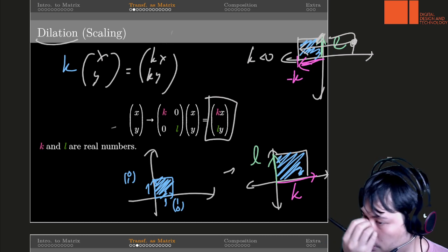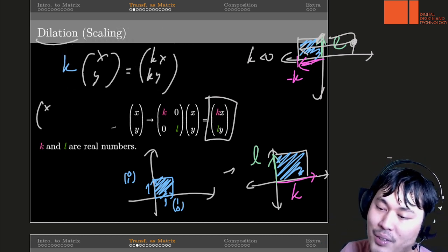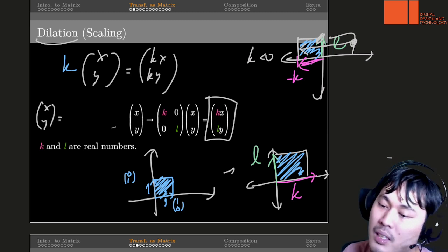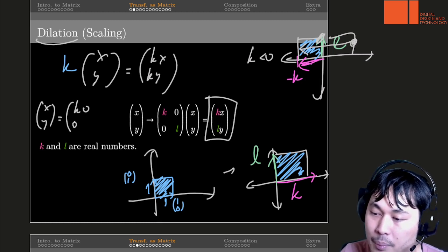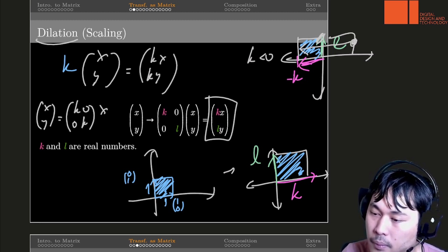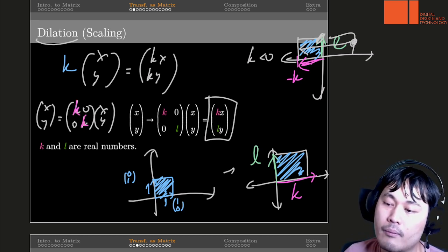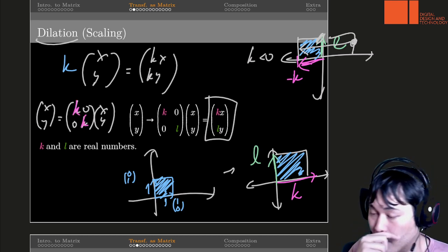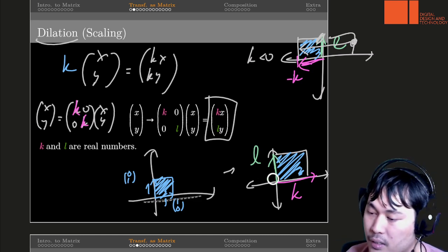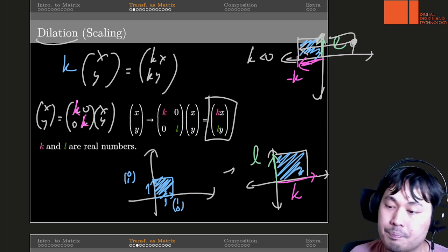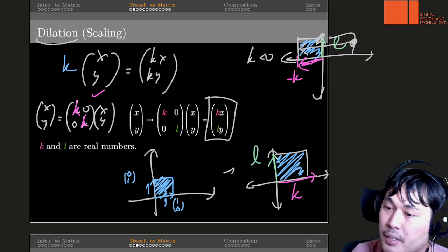By the way, if you still need to multiply by the same number, you can of course use a matrix. There will be a matrix where both numbers are the same — we can put k and k here. The result would still be a square because we dilate x values and y values by the same amount. So that works as a special case of dilation or scaling.